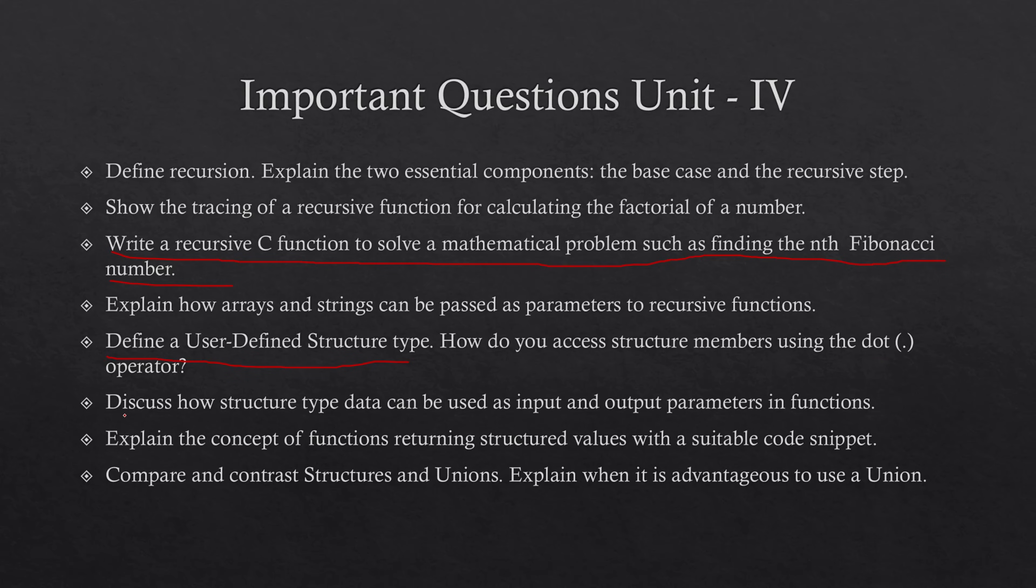Define the user-defined structure type, how do you access structure members using the dot operator, discuss how structure type data can be used as input and output parameters in functions. Explain the concept of functions returning structured values with suitable code snippet. Compare and contrast structures and union, explain when it is advantageous to use a union. Try to write the answers without seeing your textbook or reference material. If you are able to write two to three pages, then it is well and good. If you are unable to write, then practice it properly because there is a lot of time.